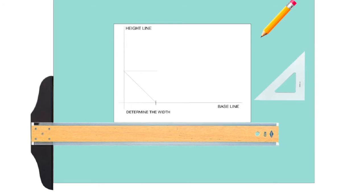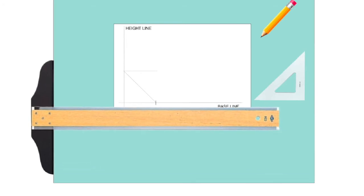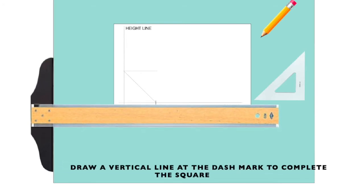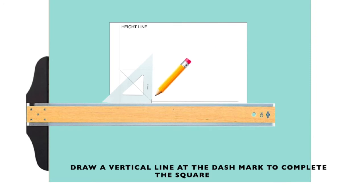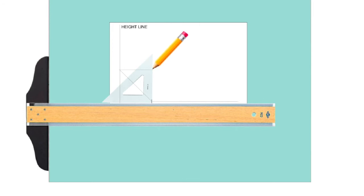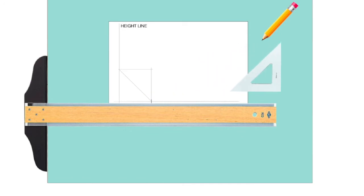Now, take the 45-degree angle triangle, and draw a vertical line where that dash mark is to complete the square. We now have a perfect square, by only using one measurement.